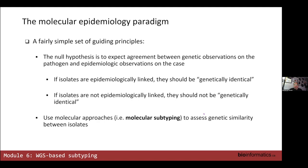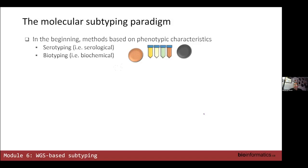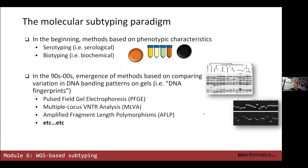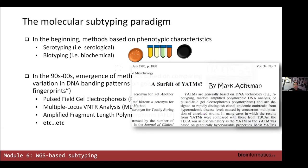For many years prior to the adoption of WGS, we were really dealing with attempting to assess similarity in the absence of real genetic data. A hundred years ago we were developing methods based on things like serotyping or biotyping, and that evolved into methods based on DNA — a lot of it involving running gels — and that led to a proliferation of methods.